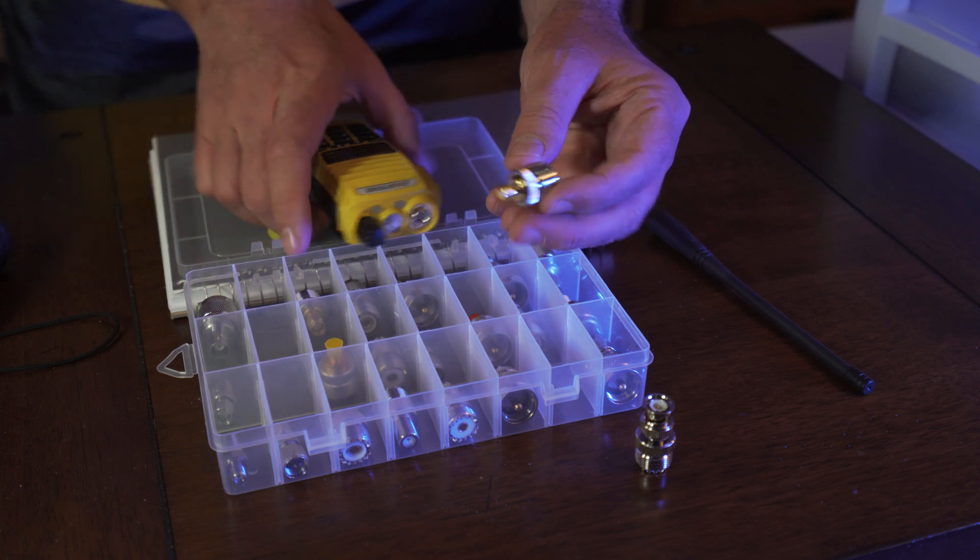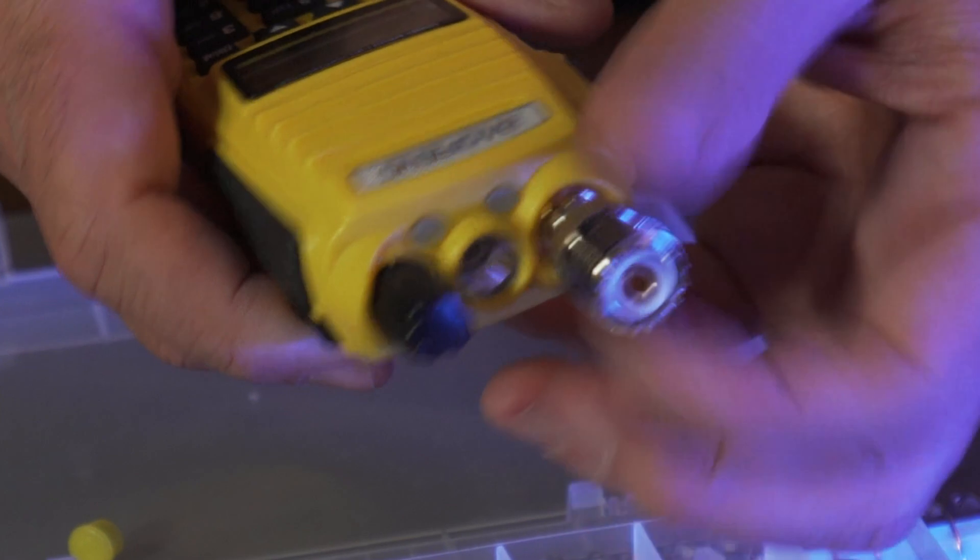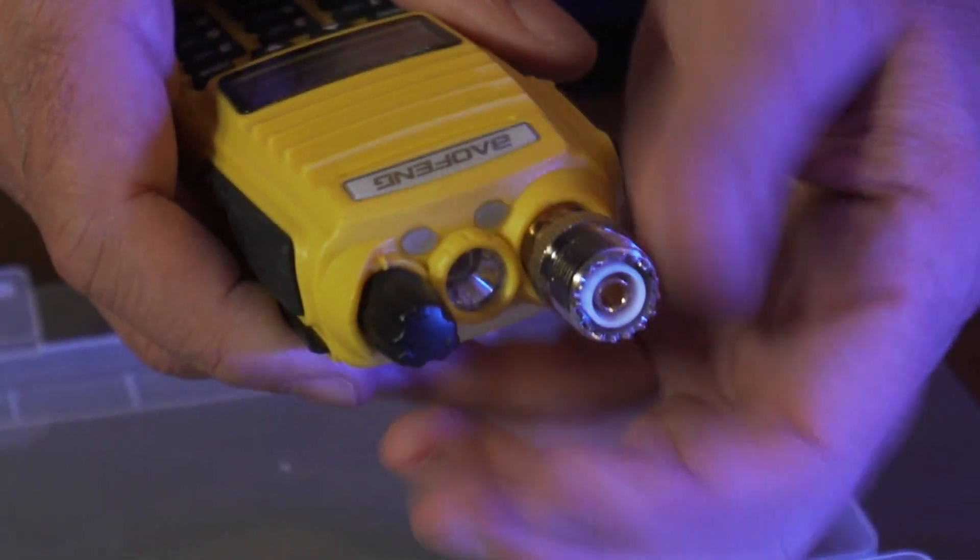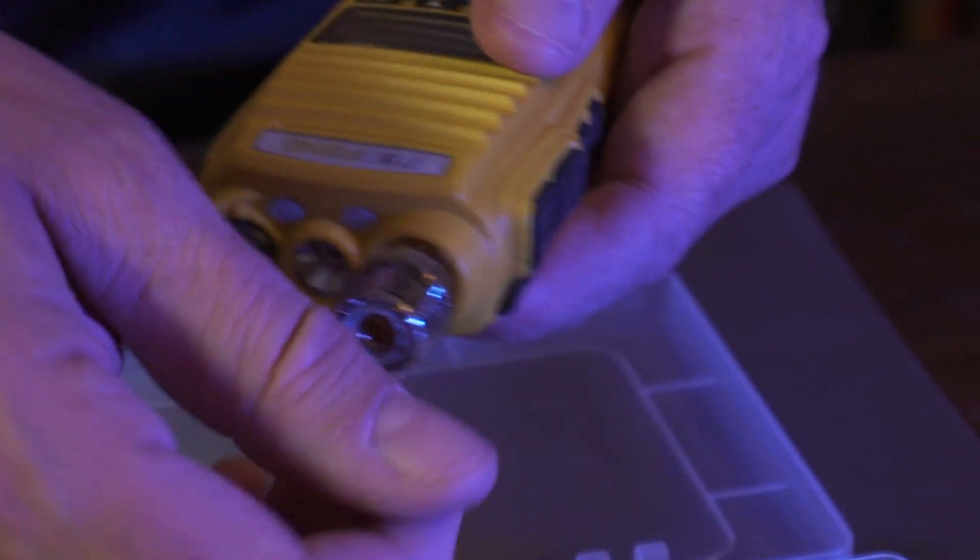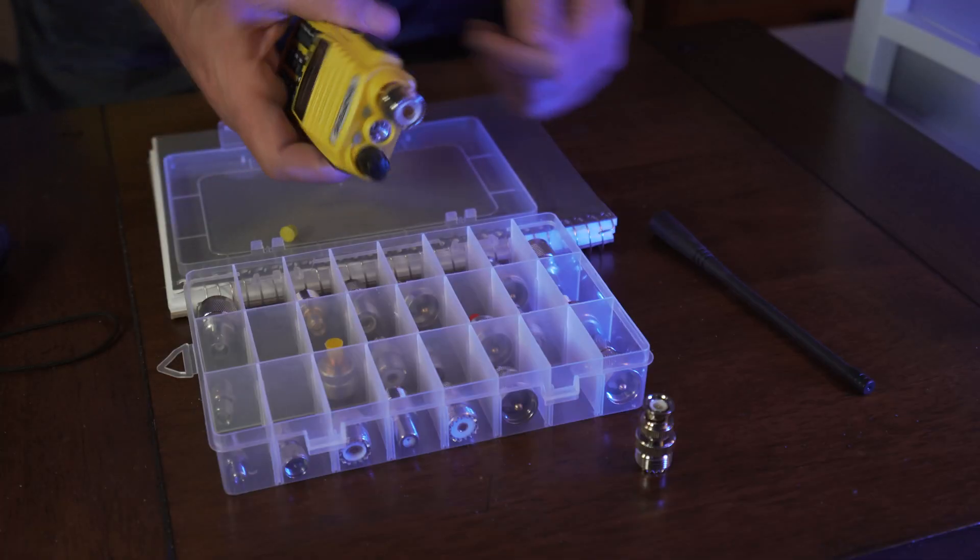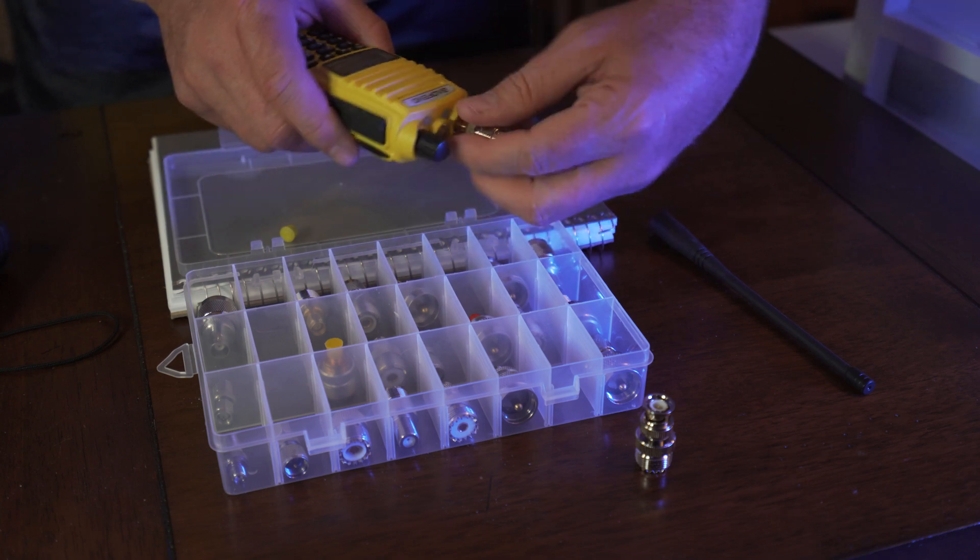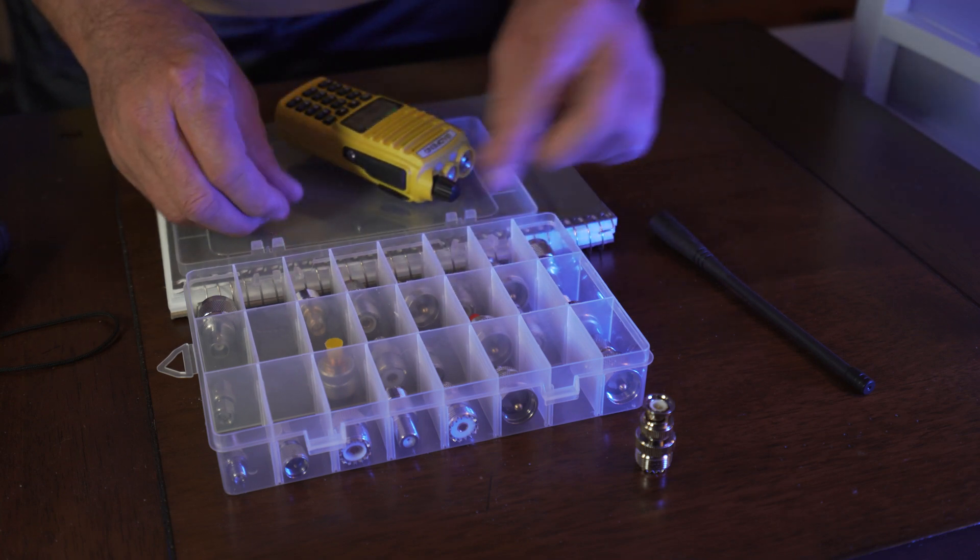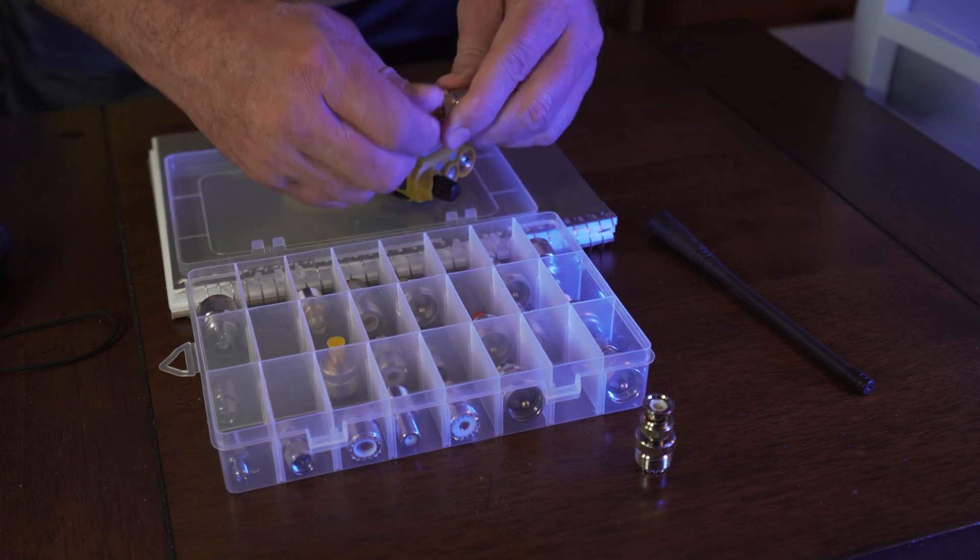For example this would be SMA to my Baofeng right here. This assortment right here, then I could put PL-259 on here and go out to my car and I'm fine. That's why you need an assortment. An assortment gives you power to mix and match especially when you're out in the field.